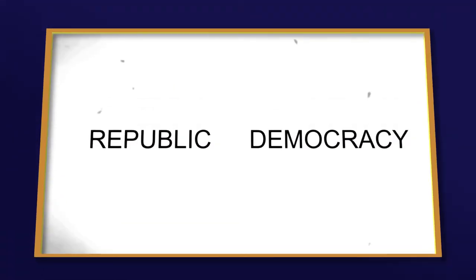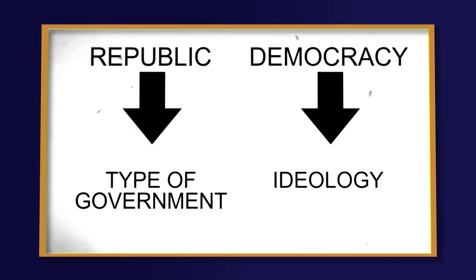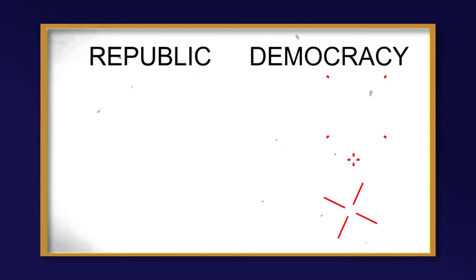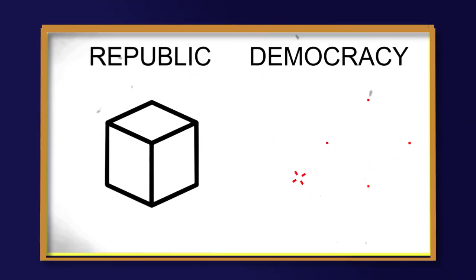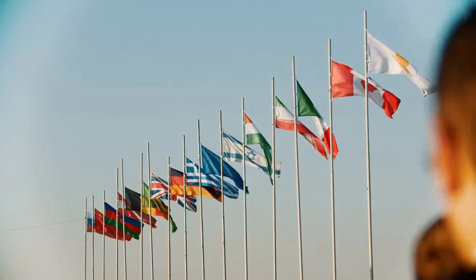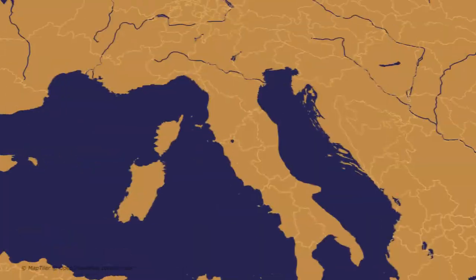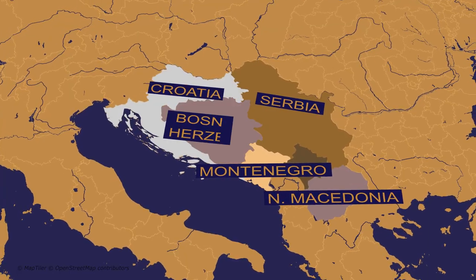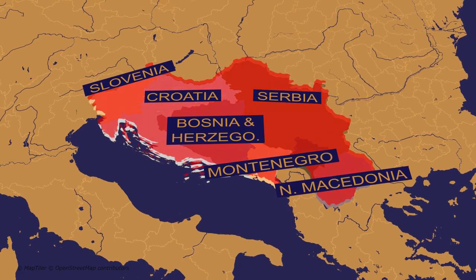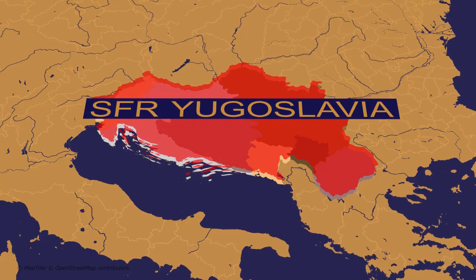A republic is a type of government, whereas democracy is an ideology that helps shape a republic form of government. Democracy is a more abstract set of ideas, whereas a republic is more concrete. Not all countries are republics — there are well-known cases of other forms of government, such as monarchies or partial republics. All republics today are countries. The only exception would be the countries that shaped Yugoslavia: each of those republics had their own constitution, governments, and Minister of Foreign Affairs, yet all of them were under the federal government of Yugoslavia that upheld collective objectives and laws.